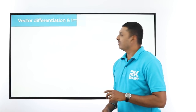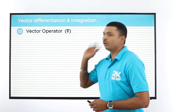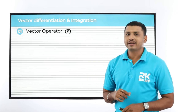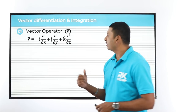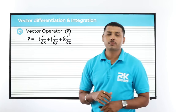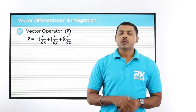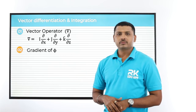Now we will learn vector differentiation and vector integration formulas. We will start with the vector operator. The symbol del is equal to i del/del x plus j del/del y plus k del/del z. This is the vector operator.